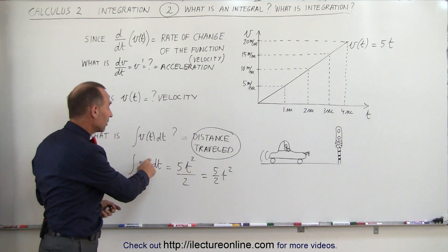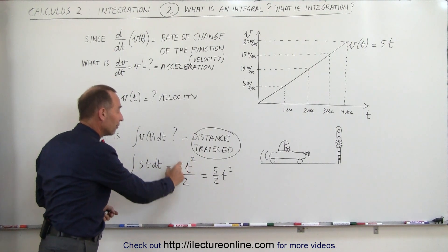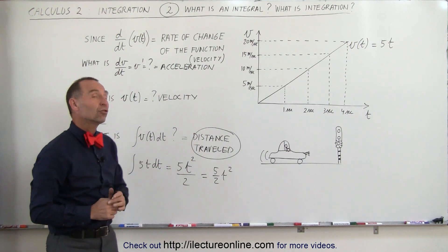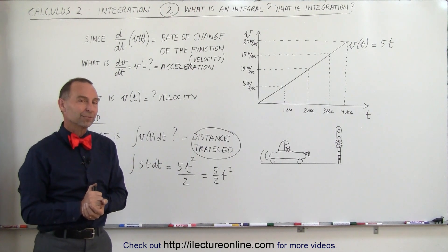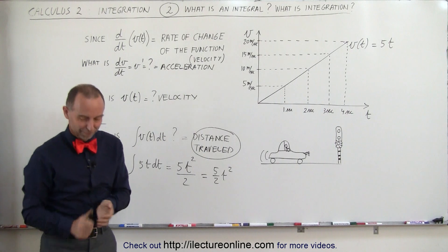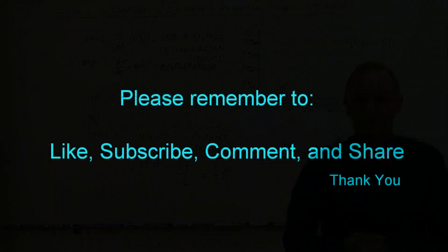So in this case, instead of t, we get t to the second power divided by 2, and of course, then we get 5 over 2t squared, which in this case represents how far the car has traveled. And that's how it's done. Thank you.